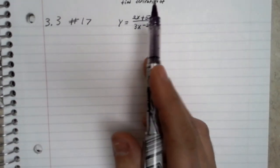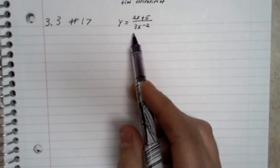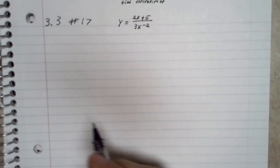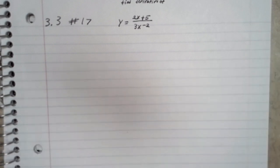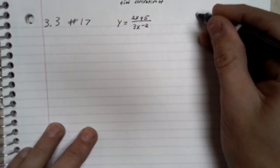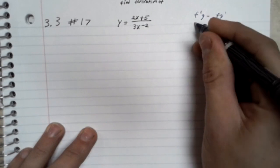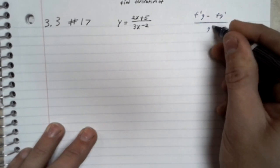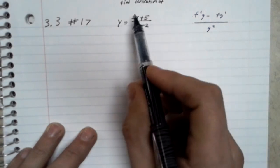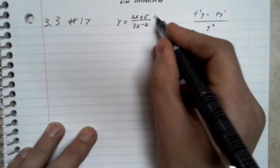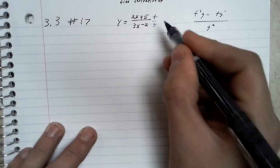I'm going to find the derivative of y equals 2x plus 5 over 3x minus 2. For this, I'm using the quotient rule. The numerator will be f, and the denominator will be g.